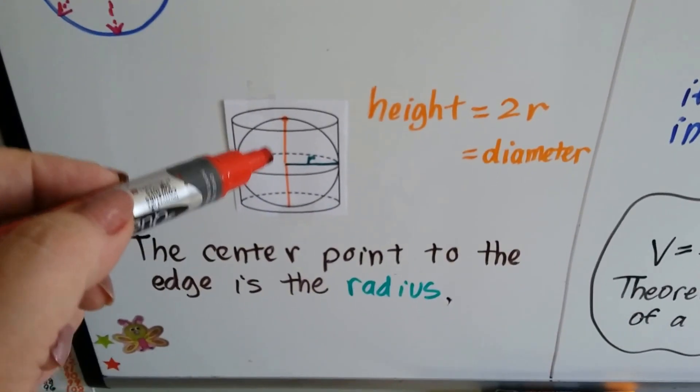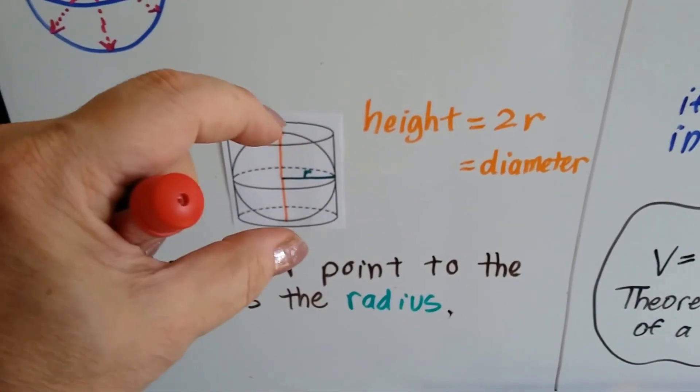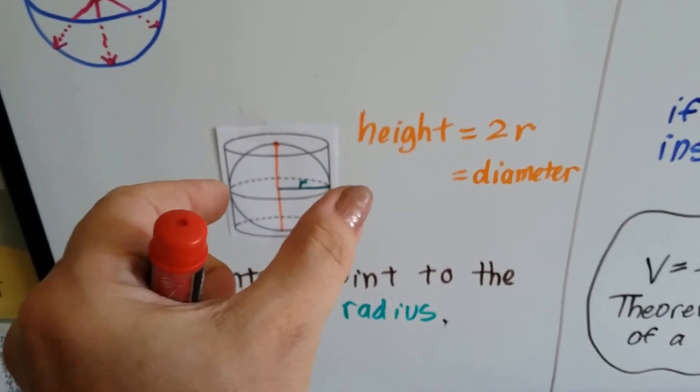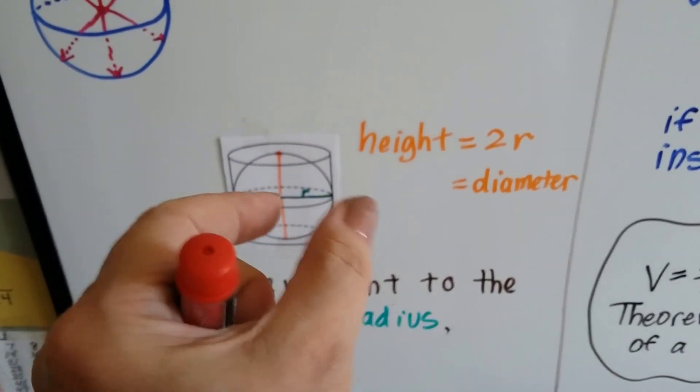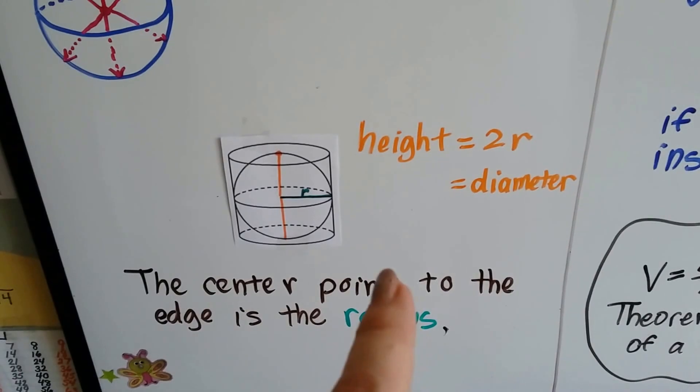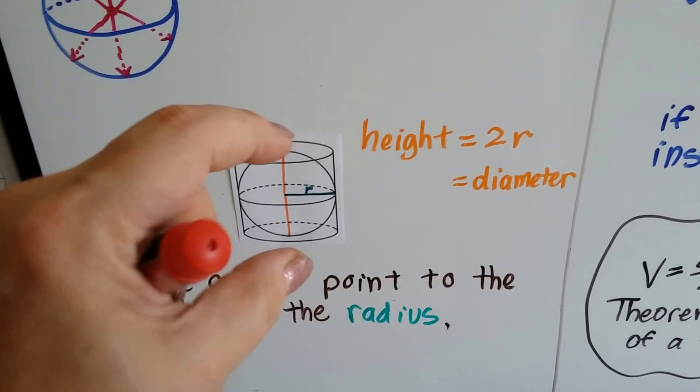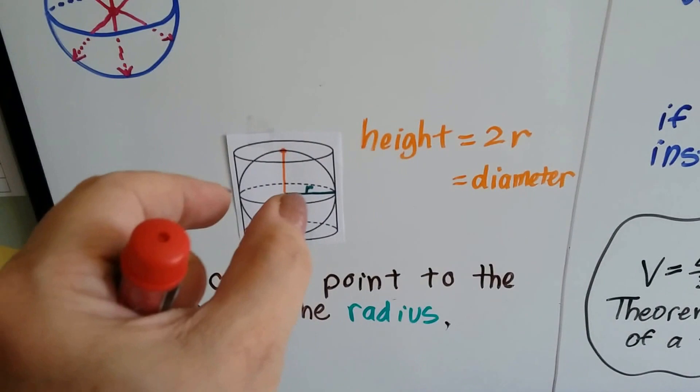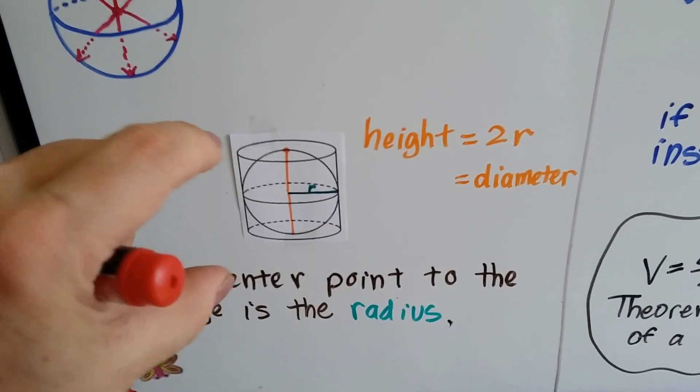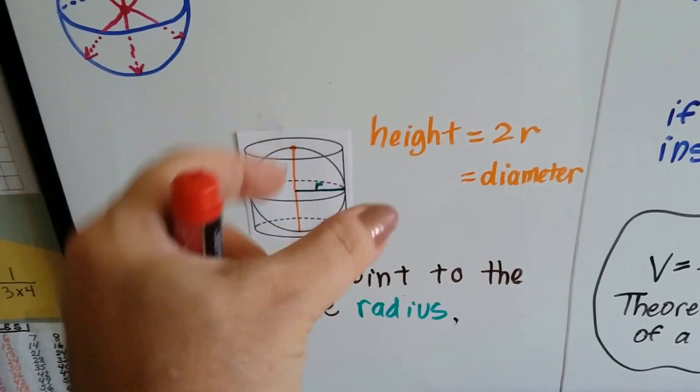And if we put our sphere inside of a cylinder that has the same height and the same diameter, which means it's got the same radius, the height is going to be two radii. See? Here's one radius. We'd have another radius, and that would be the height, no matter which way we turned it.